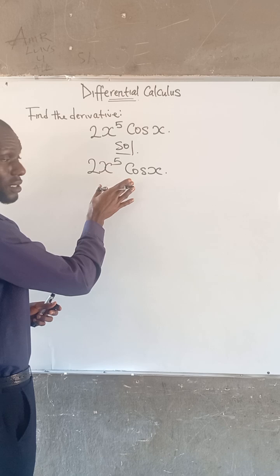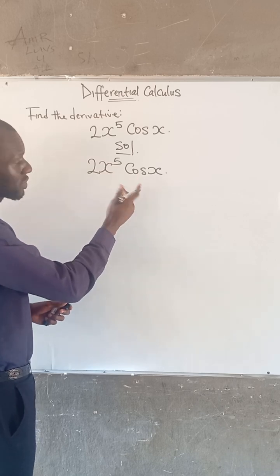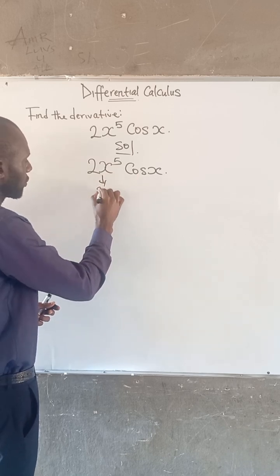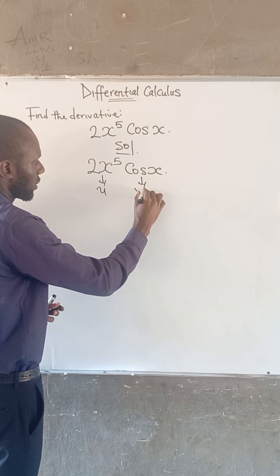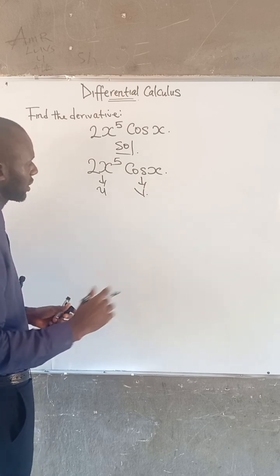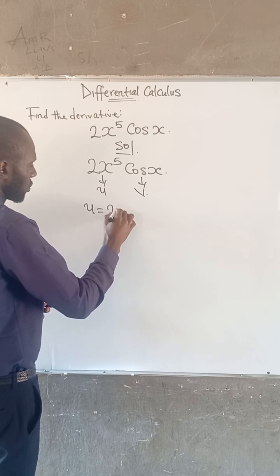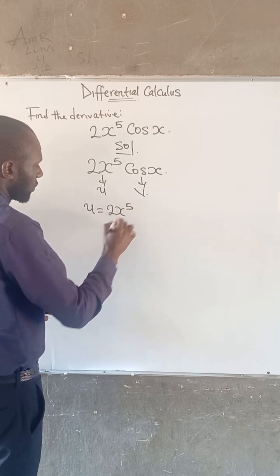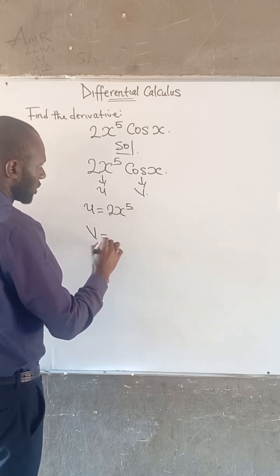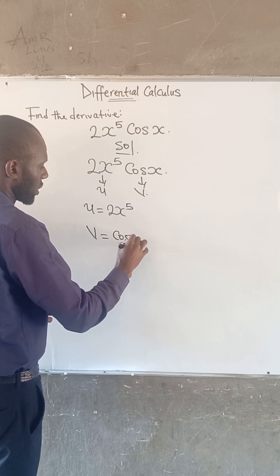Now, since this is a product of two terms, let's call here u and let's call here v. So at this point, we have that u is equal to 2x to the power of 5 and v is equal to cos x.